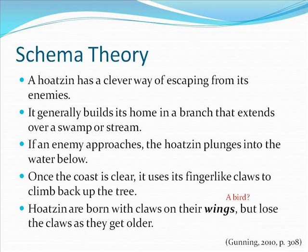You also did quite a bit of inferencing. When you read about the wings in the last sentence, you probably inferred that the Hotson is a bird, even though it dives into the water. Thus, you were able to fill in the type of animal slot. You probably also inferred that the Hotson's enemies could not reach it in the water, and that the animal is not fierce, since it seems to prefer fleeing to fighting. Comprehending the selection about the Hotson was not so much a question of getting meaning from the text as it was of bringing meaning to it — constructing meaning by interacting with the text.